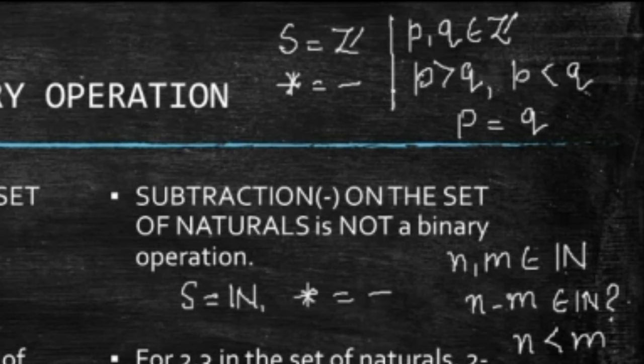If P is less than Q, P minus Q will be a negative integer. And negative integer also lies in Z. If P and Q are equal, the difference will be zero, and zero is also a member of Z. So, in this case, I can say that, subtraction is a binary operation on Z.